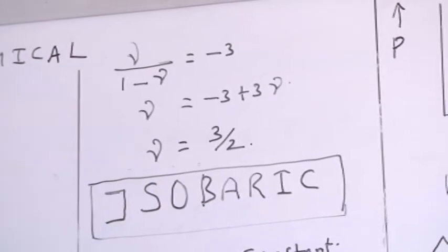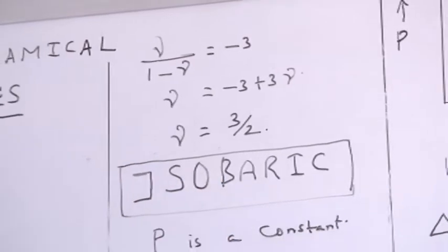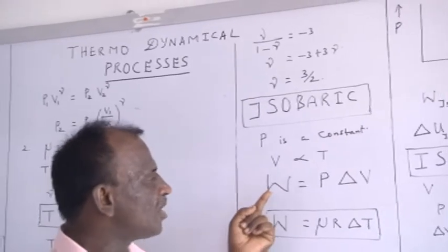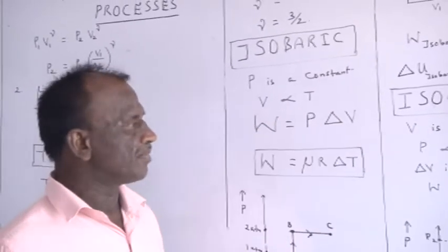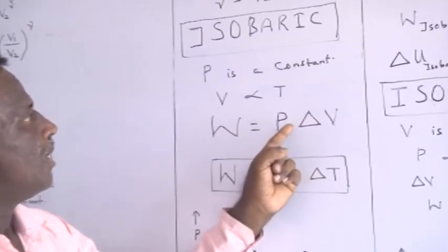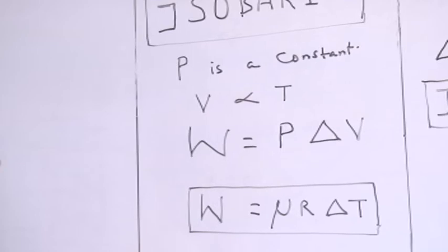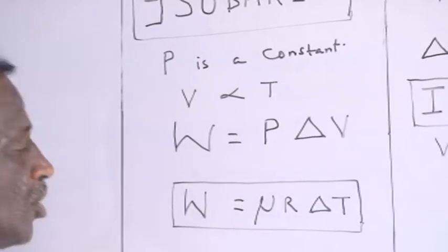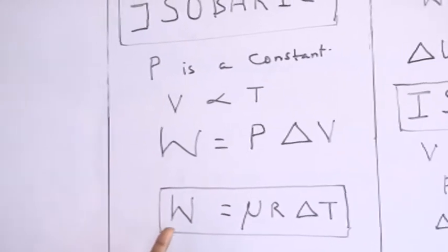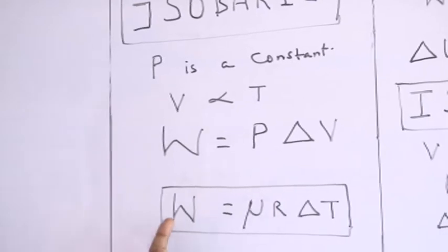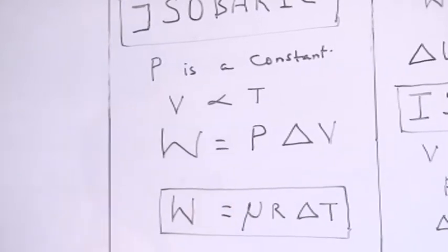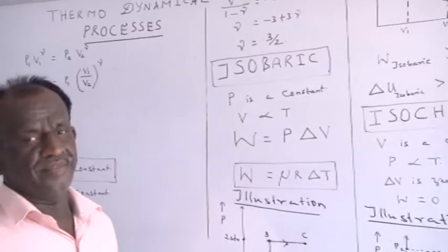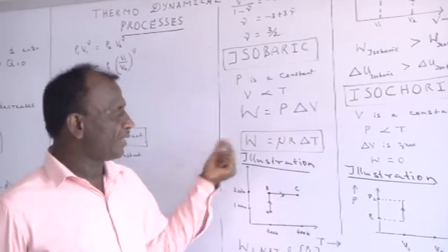Next, I am going to talk about the isobaric process. It is a process in which the pressure is constant. Therefore, the volume is directly proportional to the temperature. The expression for the work done is W equal to P ΔV. Since ΔV is the change in volume and P is the pressure, we can write P ΔV as μR ΔT using the ideal gas equation. Therefore, the work done is W equal to μR ΔT. Once you know the change in temperature, you can find the work done.